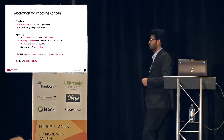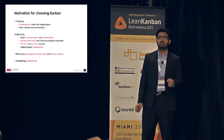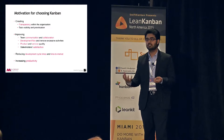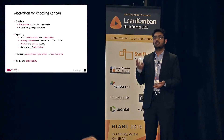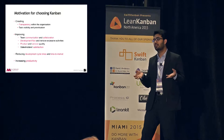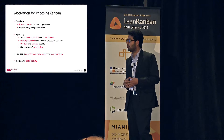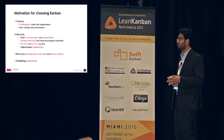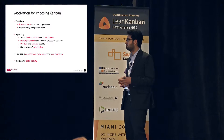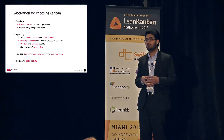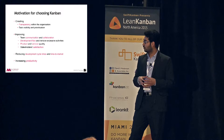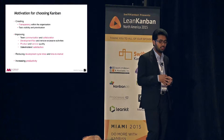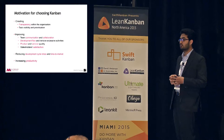The first finding — addressing the motivational question — was that companies are looking to create transparency. The main drivers were visibility, task prioritization, and improving team communication and collaboration. Even companies already partially or fully using Agile or Scrum still faced these problems and were looking for new practices. Development flow was another motivational factor. This was the motivation for companies to start using Kanban.